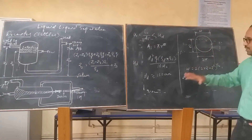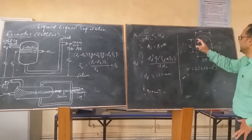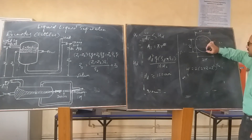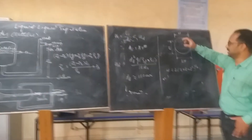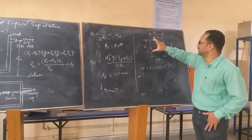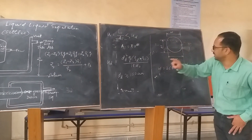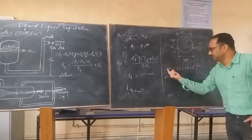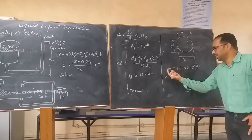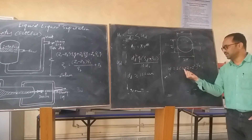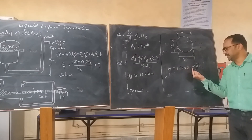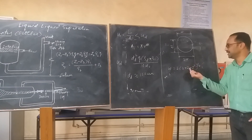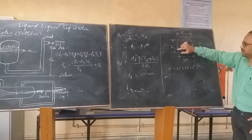For the horizontal type of decanter, the area or width of the interface varies depending on the location of the interface. If z is the height of the interface from the bottom of the horizontal decanter and 2r is the diameter, then the width of the interface w is determined by the equation: w = 2 · (2rz − z²)^(1/2), where r is the radius of the horizontal decanter and z is the height of the interface from the bottom.